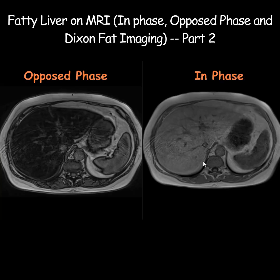Opposed-phase imaging causes a drop in the MR signal at the interface between water and fat — that's why you see this dark boundary or border. In comparison, the in-phase sequence doesn't have the dark border because it does not highlight the water-fat interface.